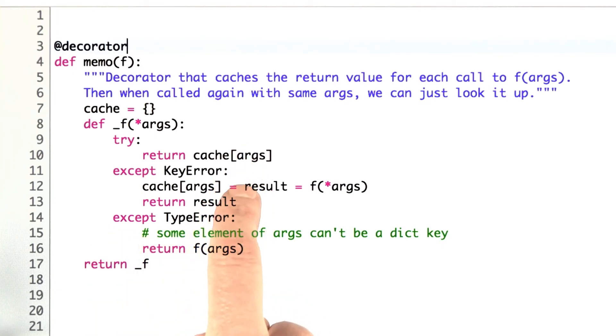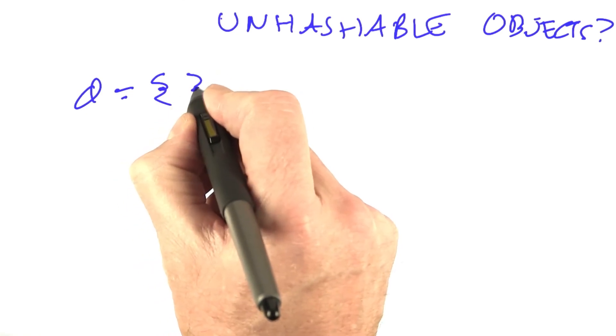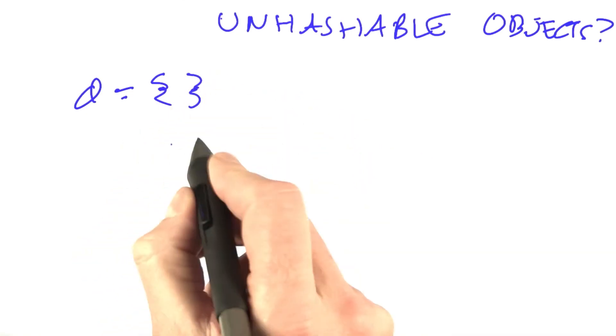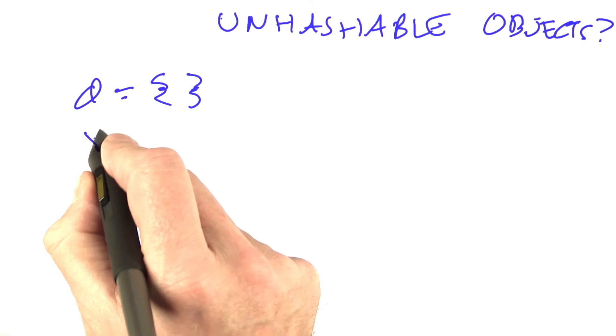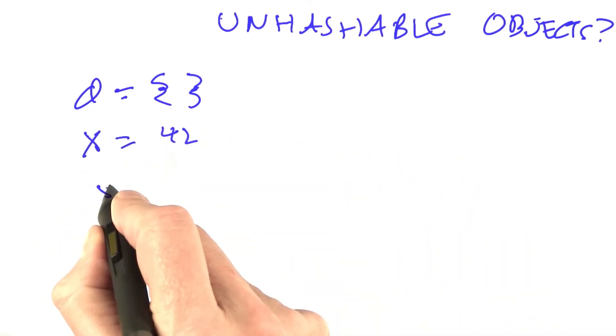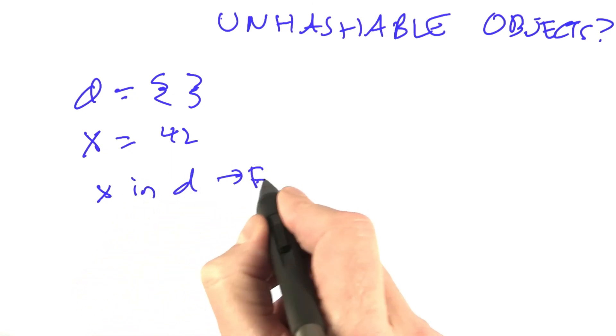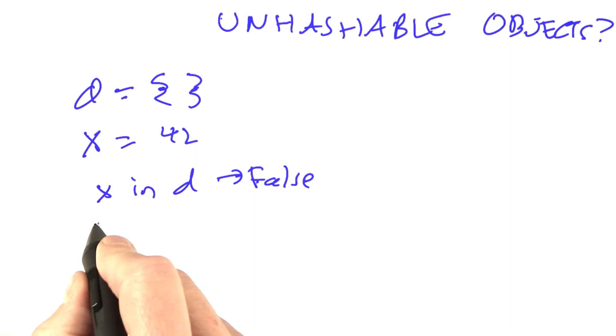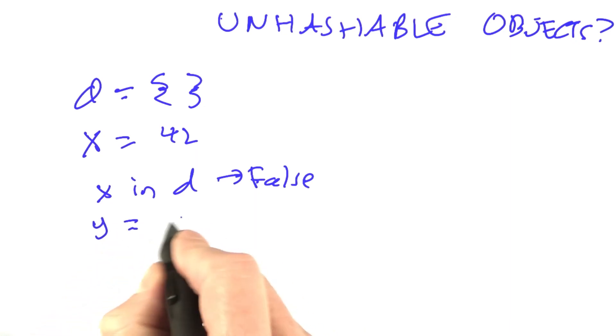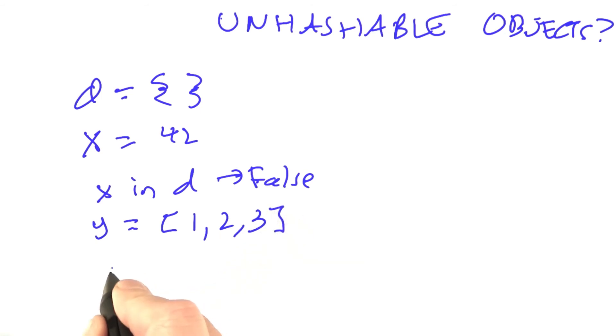Either the args are in the cache or they aren't, but then there's this third case, which says that the args are not even hashable. What does that mean? Start out with the dictionary d being empty, and then I'm going to have a variable x, and let's say x is a number. If I now ask, is x in d? That's going to tell me false. It's not in the dictionary yet. But now let's say I have another variable, which is y, which is the list 1, 2, 3.